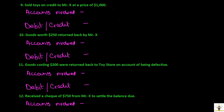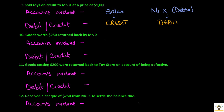Transaction: sold goods on credit to Mr. X at a price of $1,000. Again the business is selling goods, so there'll be a sales account. But this time it's not receiving cash — it is selling on credit. Mr. X is a debtor; debtors are people or firms to whom goods are sold on credit and the amount will be received from them in future. Sales account will be credited — goods are going out, hence credited. Mr. X is a debtor, which is an asset, and asset is increasing — hence Mr. X will be debited.